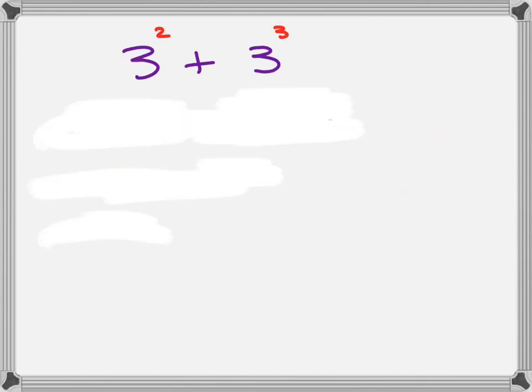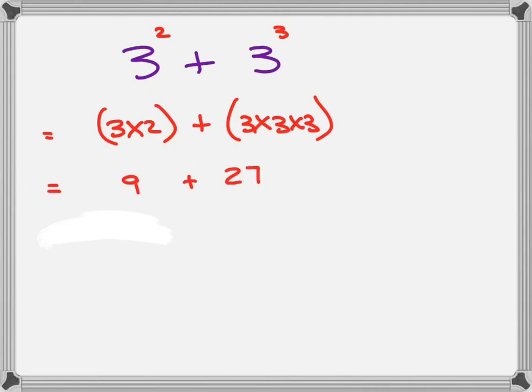So let's do a few of those. This one would be 3 to the power 2 and 3 to the power 3 would be written like that. And then you work them out. 9 plus 27 and you come to the answer 36.